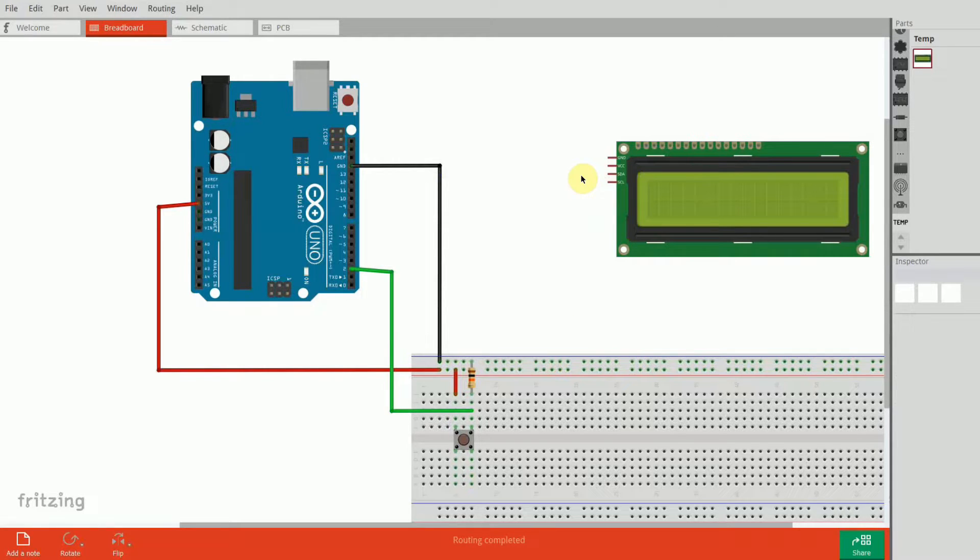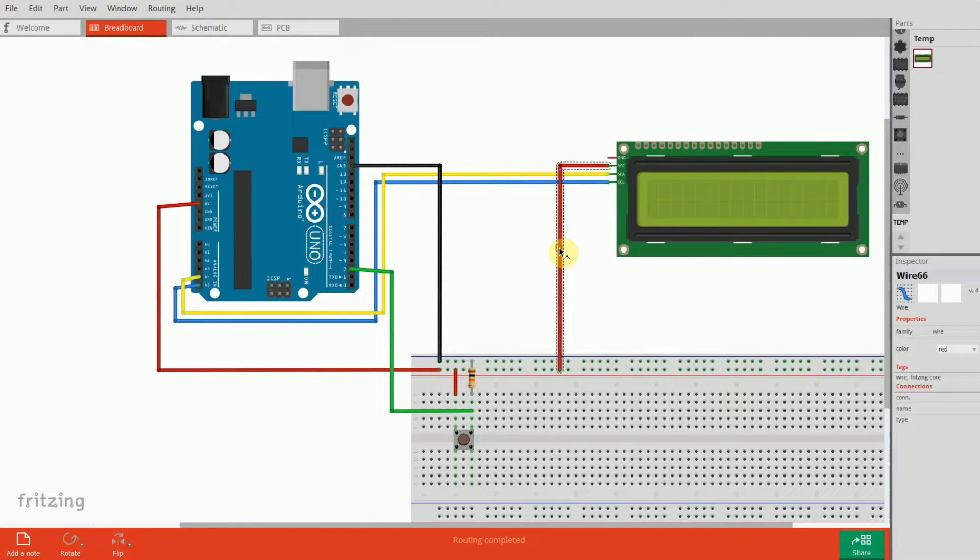Next, connect the i2c LCD. The SDA pin connects to A4 and the SCL pin connects to A5 on the Arduino. Connect VCC to 5V and GND to GND. Here's how I assembled this circuit.